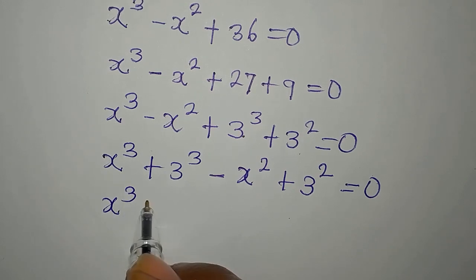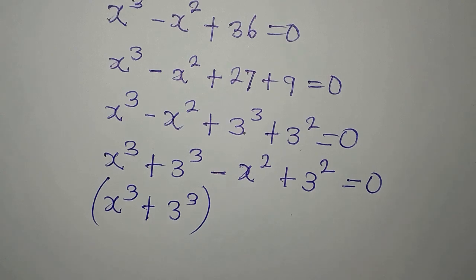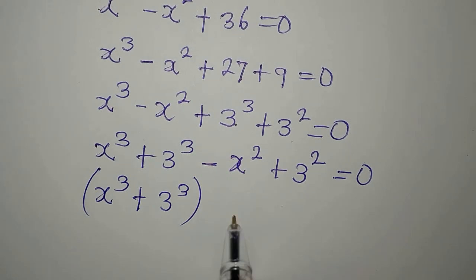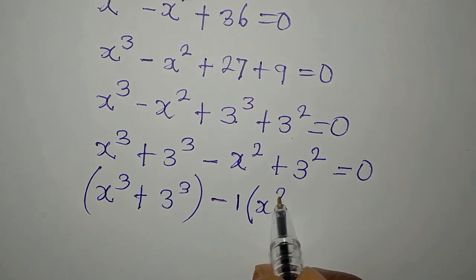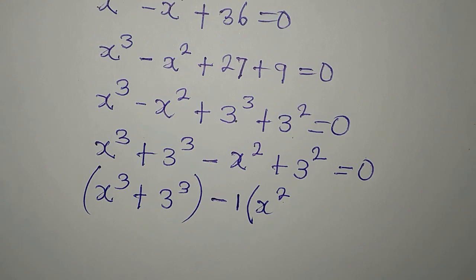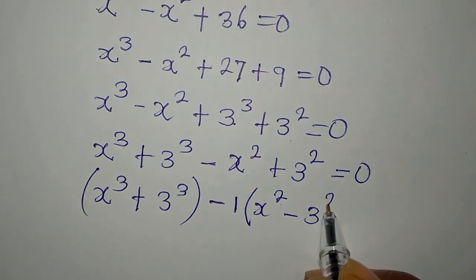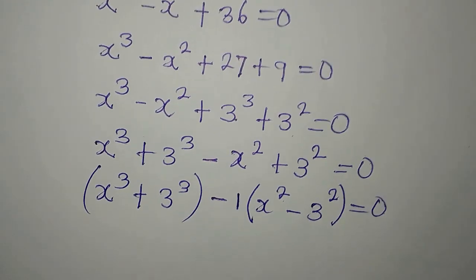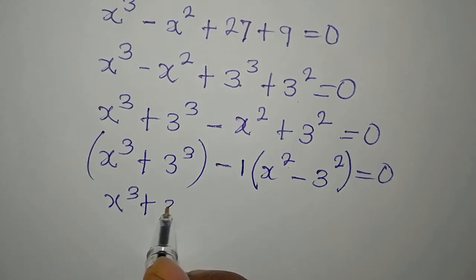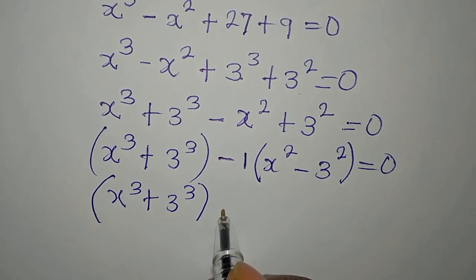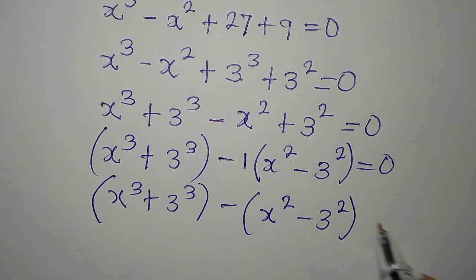I already have x to the power of 3 plus 3 to the power of 3 — I'm going to factorize that. Then to group the other pair, negative 1 is a factor, so I have x squared, and this negative affects the next term, making it negative 3 to the power of 2. So the expression is: x to the power of 3 plus 3 to the power of 3, minus open bracket x to the power of 2 minus 3 to the power of 2, equals 0.